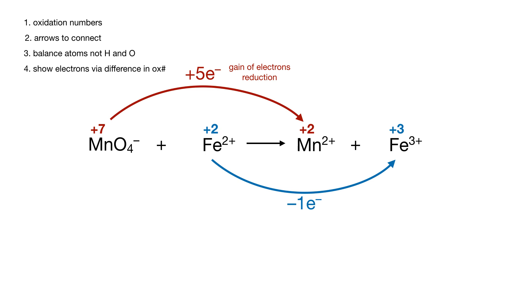One thing you'll note is this is a gain of electrons for the permanganate, which means it's the reduction. And for the iron, it is the loss of electrons, which means it's an oxidation.